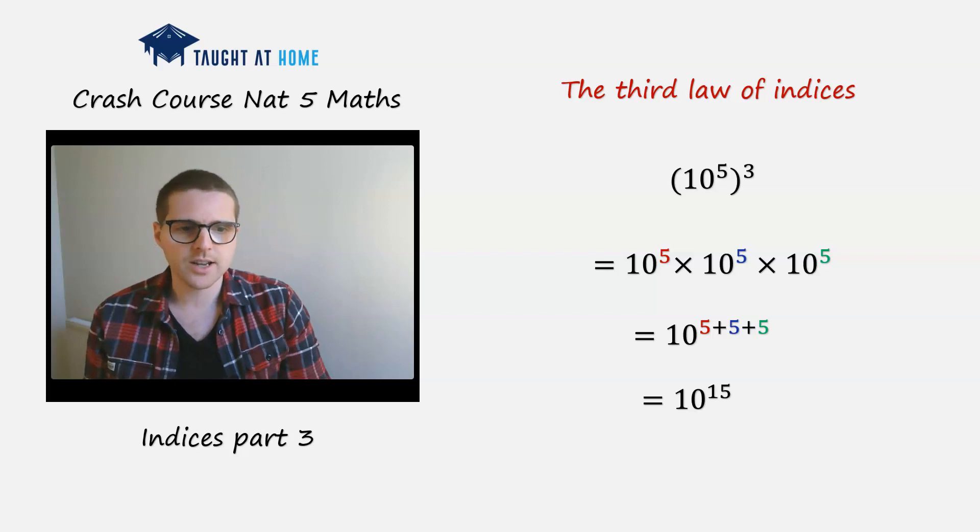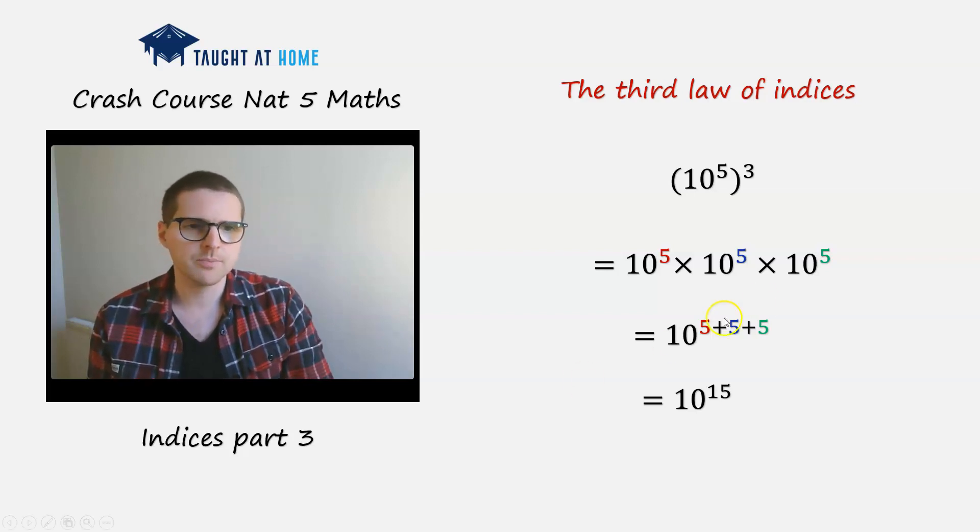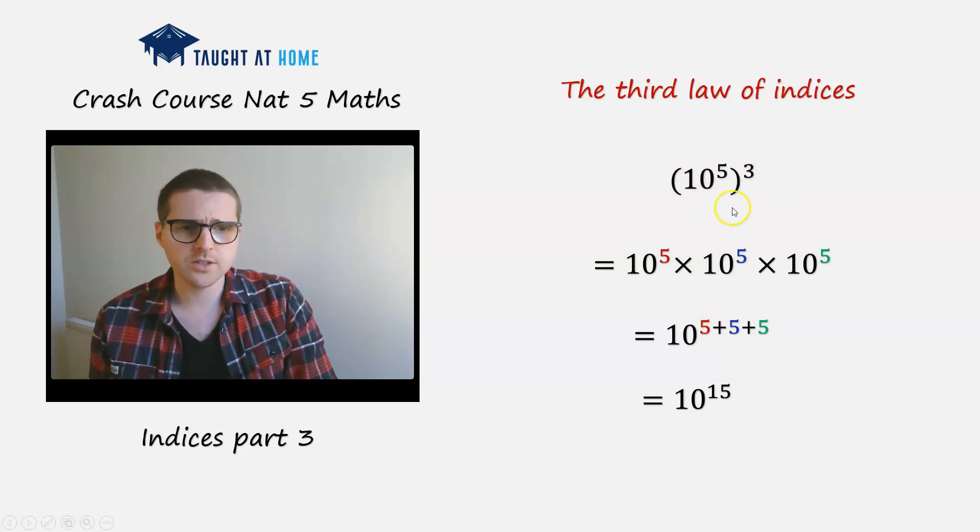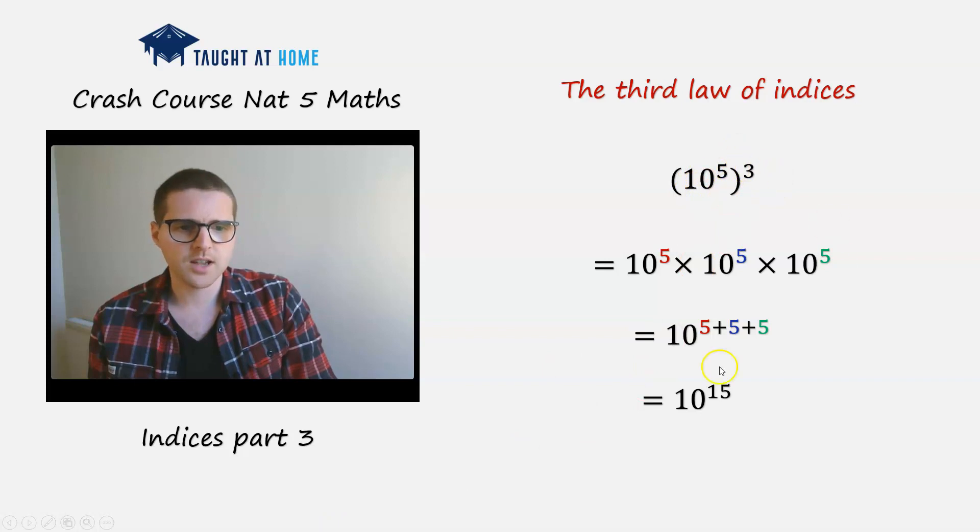Now what you might recognize, if you're pretty quick on this, is that what we're getting is a number in the index that's a multiplication of these two indices here. So what we're actually doing is we're getting the base and we're multiplying the indices up. So 3 times 5 is 15.